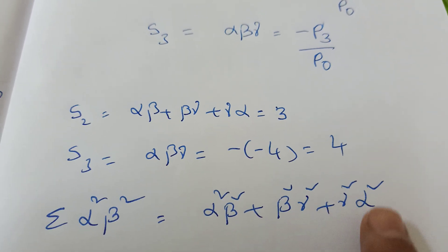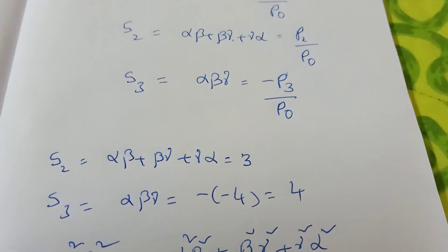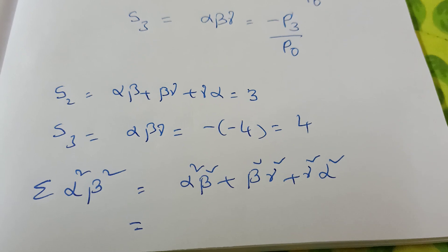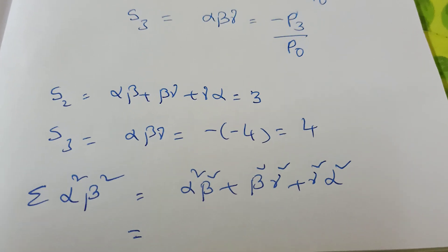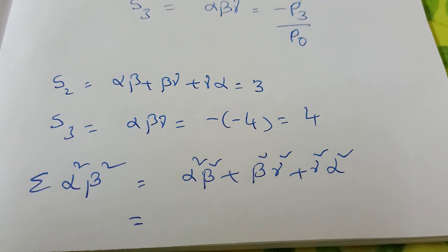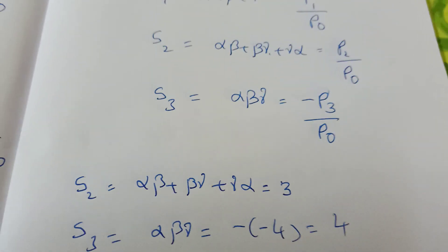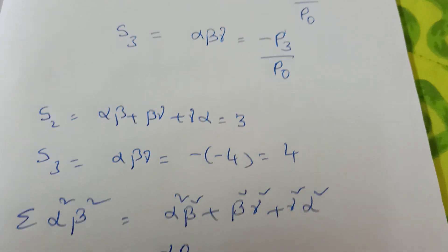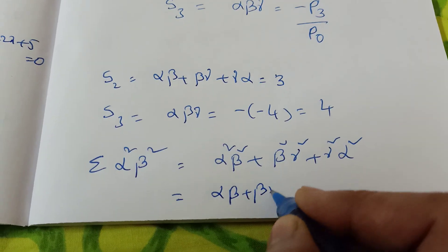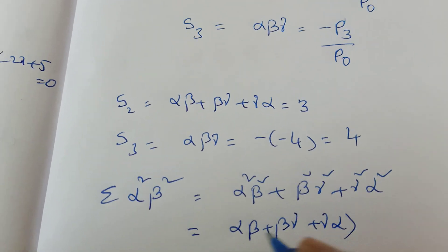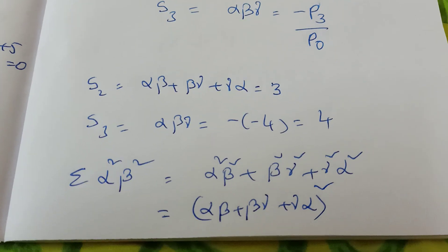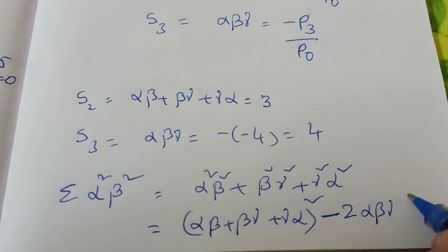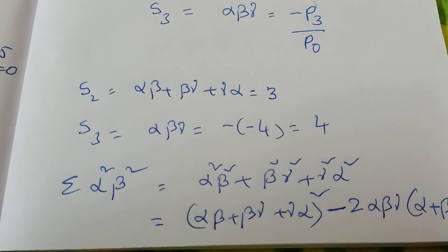Now see — A² plus B² plus C² formula is there. Then how to write? A plus B plus C whole square — remember that formula: (A+B+C)² equals A² plus B² plus C² plus 2AB plus 2BC plus 2CA. So A² plus B² plus C² equals (A+B+C)² minus 2(AB+BC+CA). I'm writing using that formula.